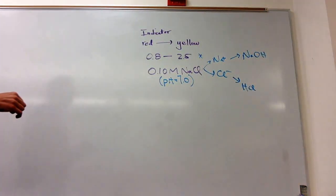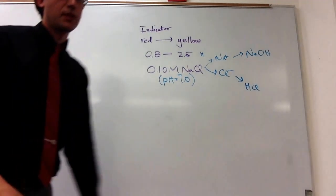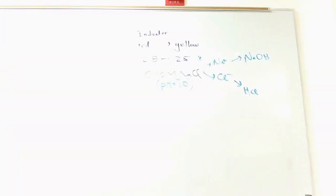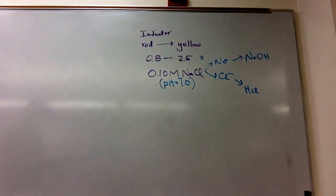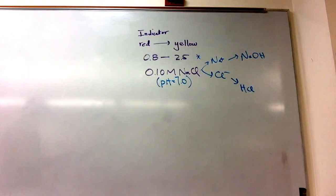Say that again? So anything past 2.5 would still stay yellow? Mm-hmm, so the indicator changes from red to yellow in the range 0.8 to 2.5. So it could change at 0.9, it could change at 1.5, it just depends on the compound. It's just in between, okay? It'll be reddish, it'll be kind of orange, a red-yellow mixture.